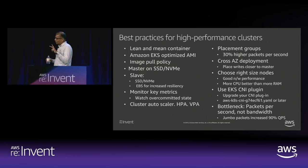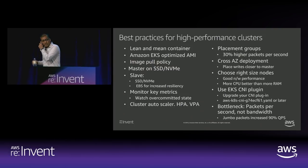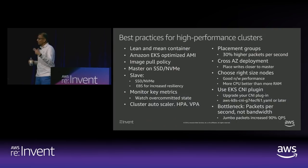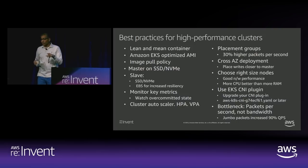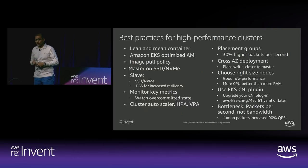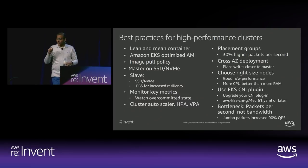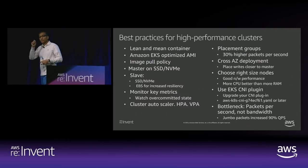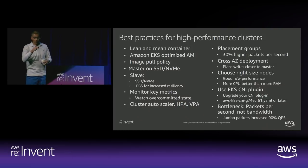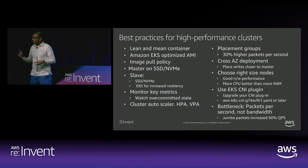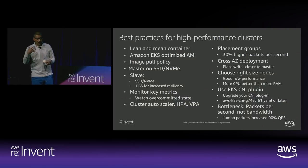From a database perspective: run masters on SSDs because you want that throughput and performance. For slaves, if you're using semi-synchronous replication — where a transaction must be replicated to at least one slave before it's acknowledged to the client — then the slave has to run at the same speed as the master, so you should pick symmetric hardware. But if you want increased resiliency, you can run some slaves on EBS-attached volumes for a little more resilience.